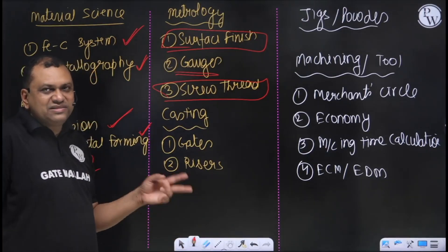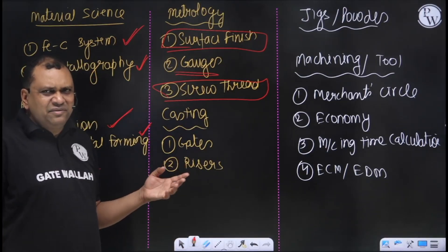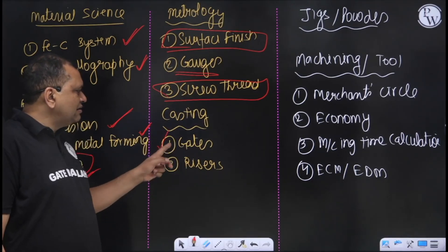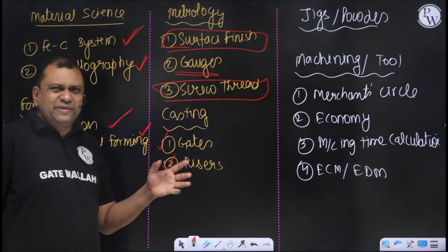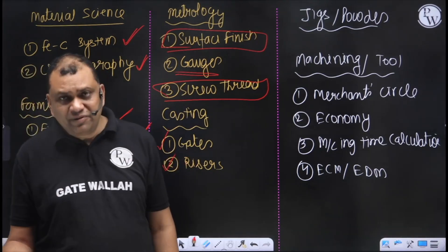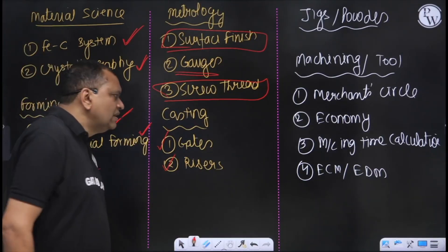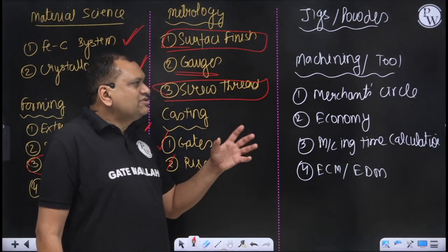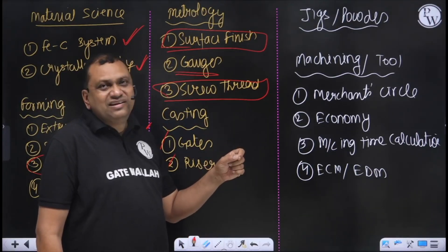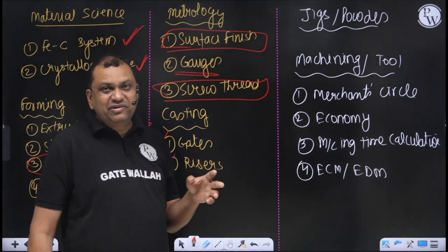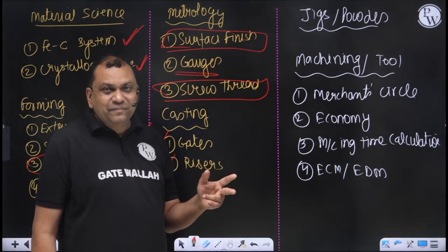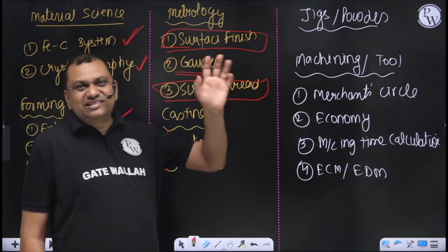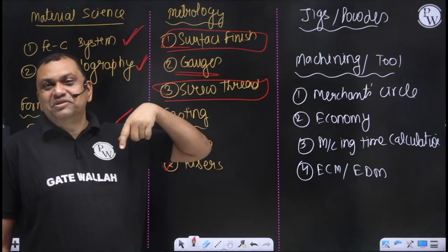Last year from casting, three questions appeared. I don't think that many questions may come from casting. Some easy question may come from either feeding, gates, and risers, but I'm expecting a very easy question this year, only one from casting. So don't focus too much time on casting, but once again, it's only predictions. I'm also expecting one question from jigs and fixtures and powder metallurgy. There's a reason - in the crash course that I'm taking nowadays, I've already started, two lectures are over. One lecture I'm dedicating to jigs and fixtures and powder metallurgy.